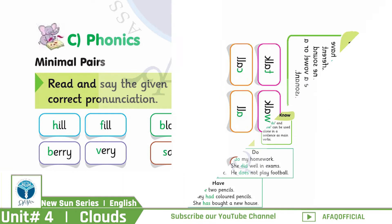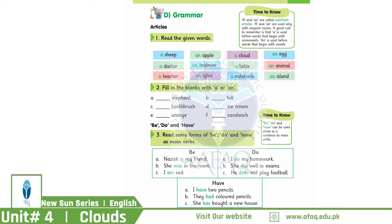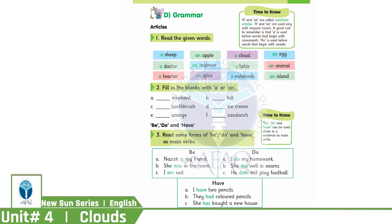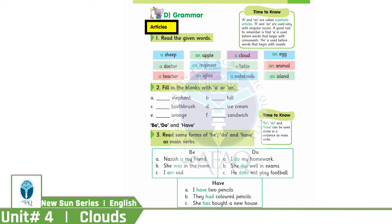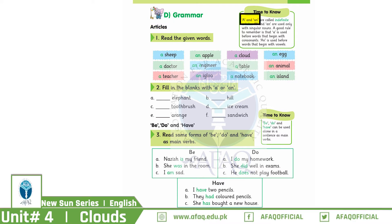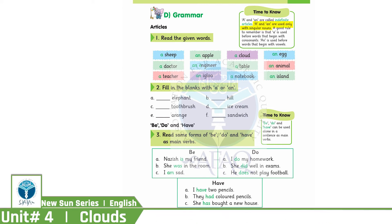Now let's move to our next task: Grammar on page number 25. Today we'll learn about the indefinite articles A and AN, and we'll also come to know about be, do, and have as the main verb. First of all, we'll start with articles A and AN with singular nouns.